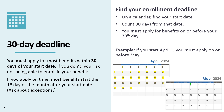Let's begin by talking about the 30-day deadline. You must apply for most benefits within 30 days of your start date. If you don't, you risk not being able to enroll in your benefits. If you apply on time, most benefits start the first day of the month after your start date. Ask about exceptions. To find your enrollment deadline, find your start date and count 30 days from that date. You must apply for benefits on or before the 30th day.